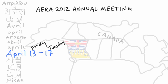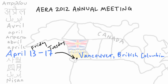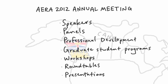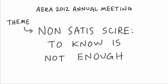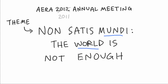The 2012 AERA Annual Meeting will be held from Friday, April 13, through Tuesday, April 17, in Vancouver, British Columbia, Canada. The meeting will include invited speakers, panel discussions, professional development courses, graduate student programs, workshops, round tables, and paper and poster presentations. The theme this year is Non Satis Skire — To Know Is Not Enough — following last year's theme of Non Satis Mundi, The World Is Not Enough.